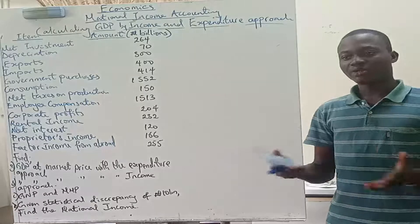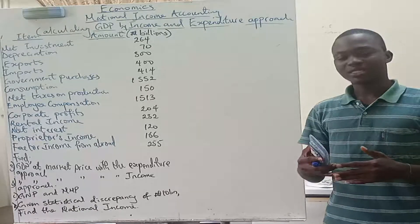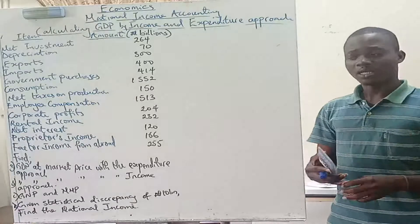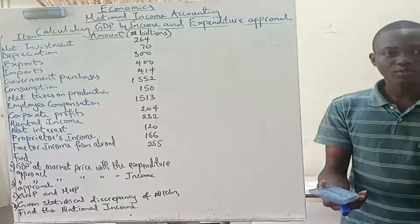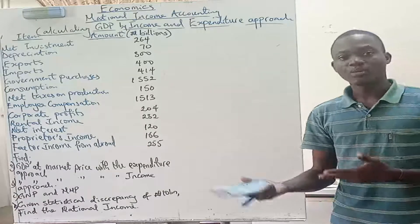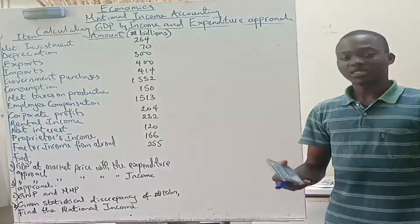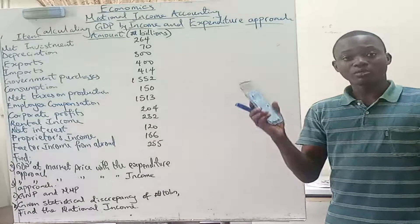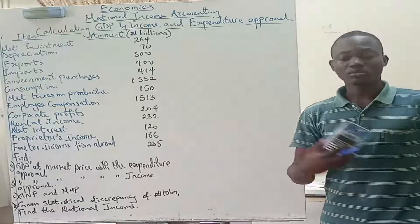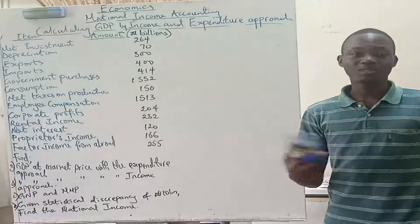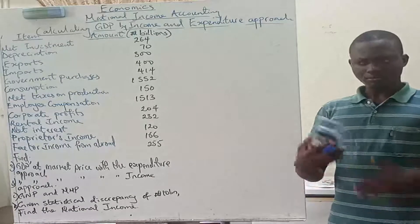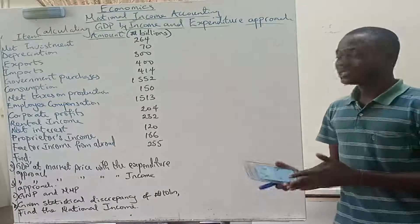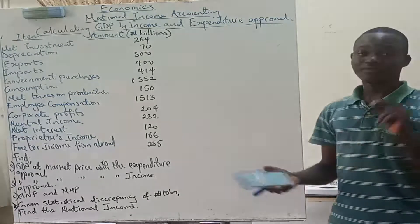Government interest is not included in national income because it is essentially interest on debt — interest on bonds issued by the government. Nothing new is being produced; somebody is just lending the government money and the government has to pay interest without producing anything. Similarly, household loan interest — for example, mortgage loans — is not included in GDP. What we include is the net interest paid by firms, because that involves new production of goods and services.